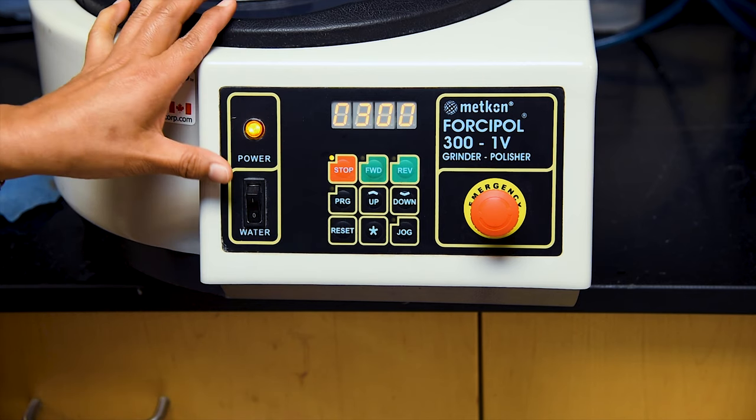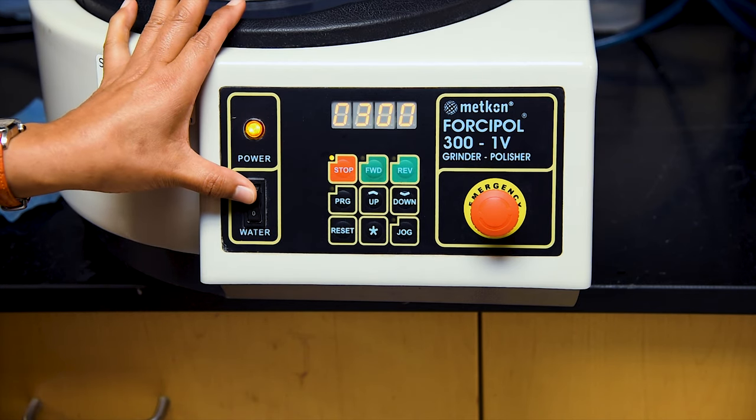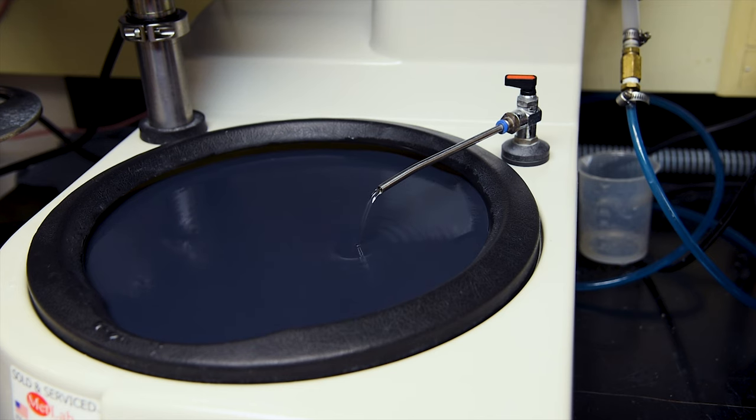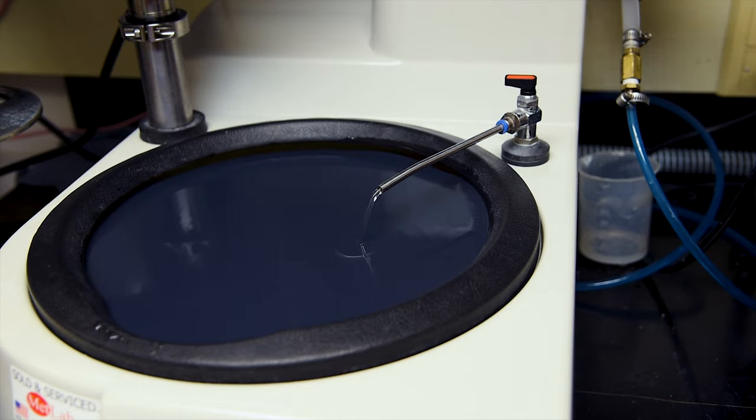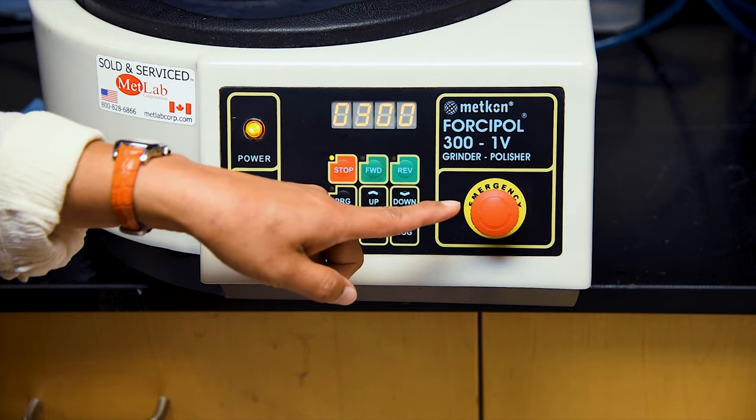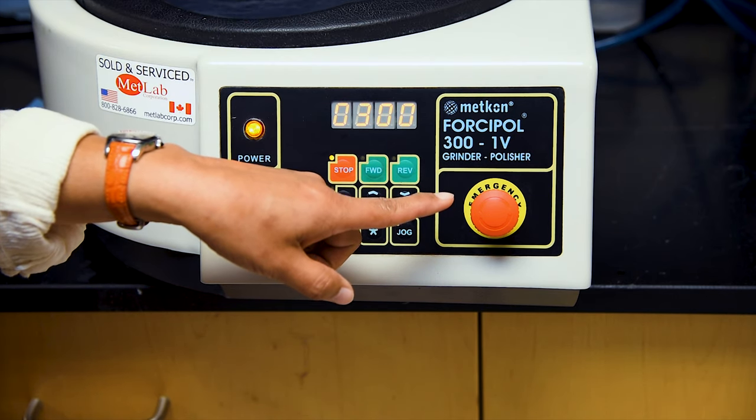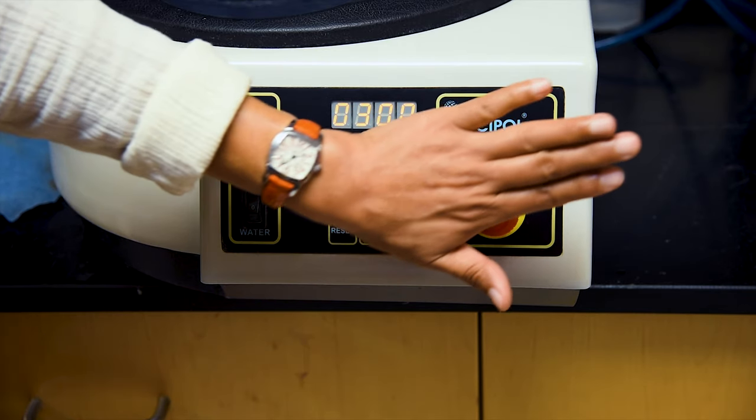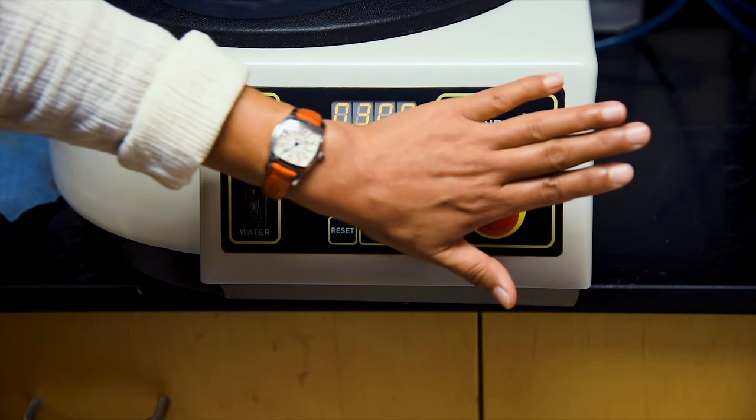As with the trim saw, our coolant and lubricant is water, started by flipping the water switch into the on position, and in the event that something should go wrong and you need to immediately stop the equipment, an emergency shutdown button is readily available to bring the operation to a halt.